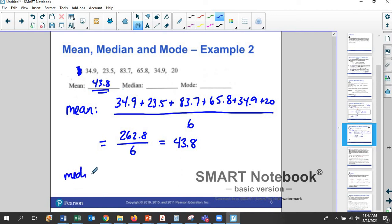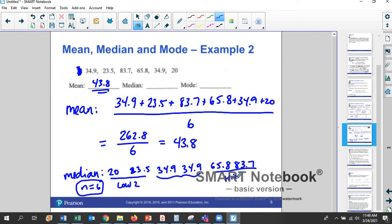For the median, what do we have to do? For the median, we have to rearrange these guys in ascending order. So 20 is the smallest, and then 23.5, and then 34.9, and then 34.9 again, 65.8, and 83.7. How many data points are there? There are six. N is the number of data points. N is six. So that means that we don't have a middle number. We have a middle two numbers once again. So these two guys are the low two. These are the high two. And then these are the middle two. And so we need to find the middle two numbers. But when you take the average of the middle two numbers, what do you get? You get 34.9 because they're the same. So in this case, the median is 34.9 because the middle two numbers are the same number. And so 34.9 is the average of 34.9 and 34.9.